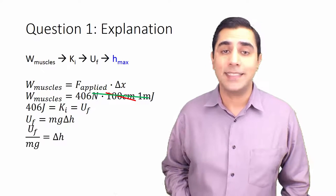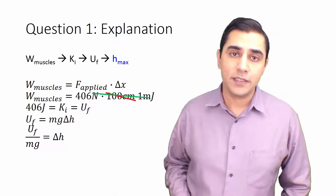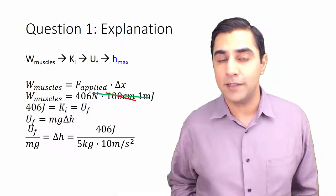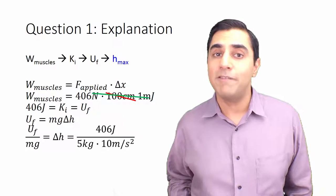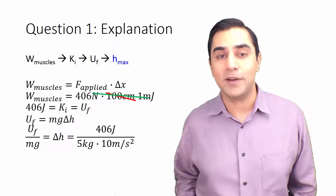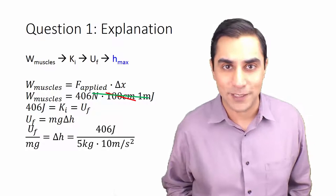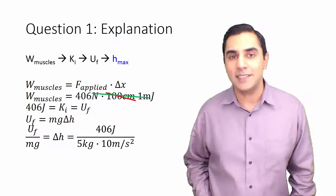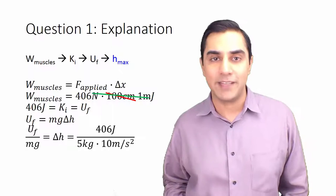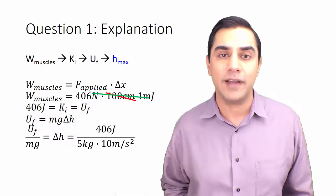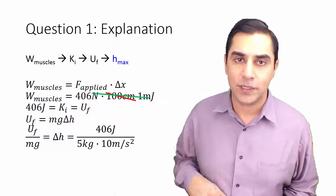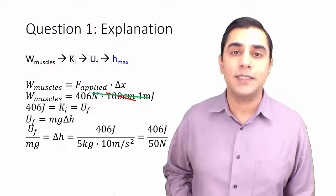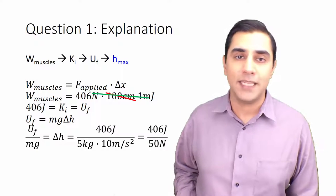Rearranging to get ΔH, we get potential energy divided by mg. Plugging in what we know: 406 joules for the final potential energy, five kilograms for the mass of the shot, and g — the acceleration due to gravity — which is 9.81 m/s² but we'll use 10 because we're not masochists. Combining the terms in the denominator: five kilograms times 10 meters per second squared. A kilogram times a meter per second squared is mass times acceleration, giving us a unit of force — a newton.